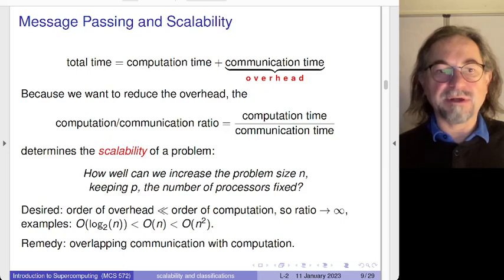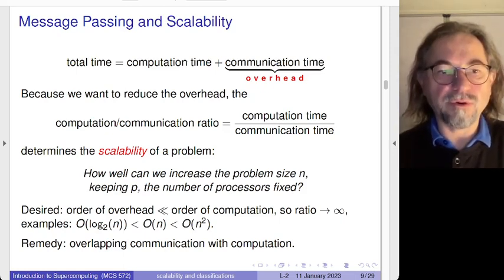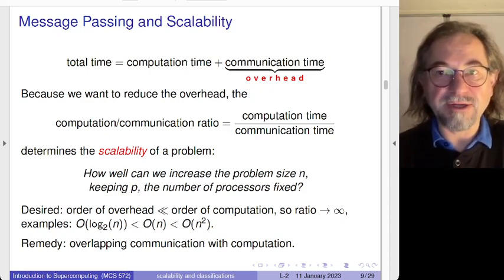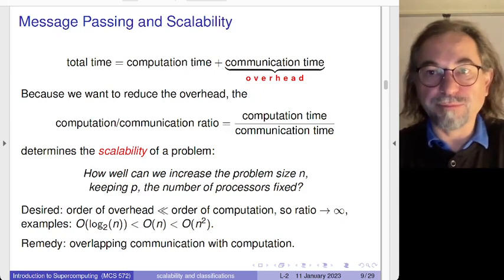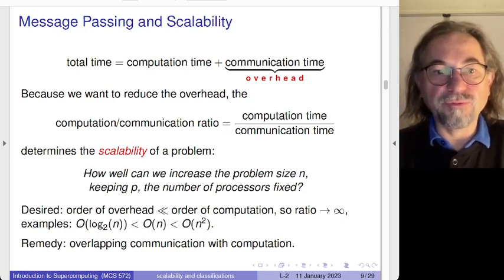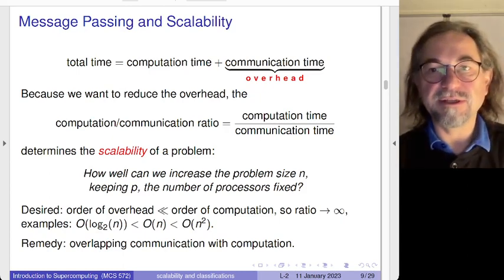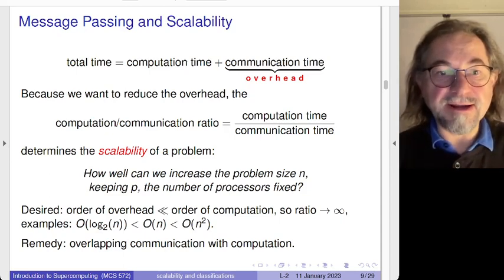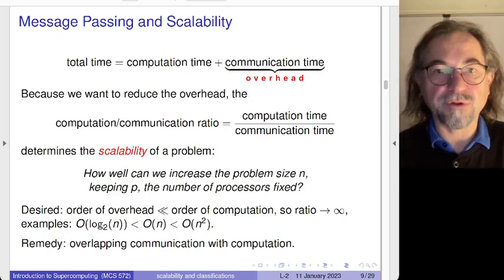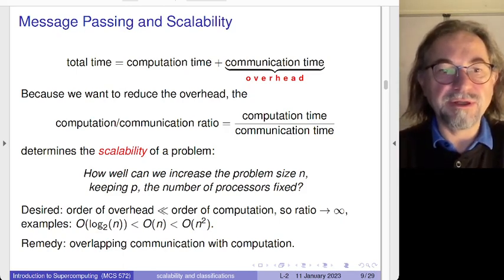The question is: how well can you increase the problem size while still achieving speedup such that the order of communication overhead does not dominate? Typically, if your computation is linear in data size, you hope the communication cost will be logarithmic — nearly constant. If you do quadratic cost computation, you hope communication cost is linear. One remedy is to overlap communication with computation, another form of parallelism that helps with cost overhead.